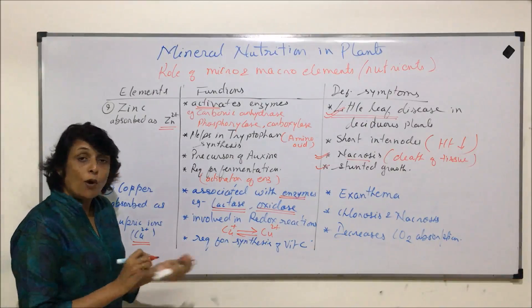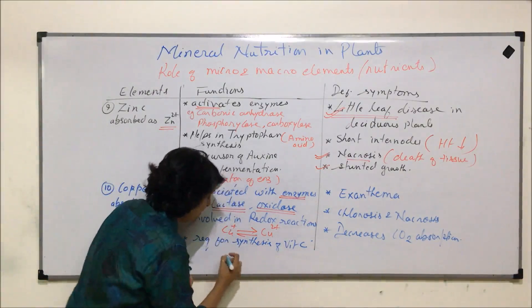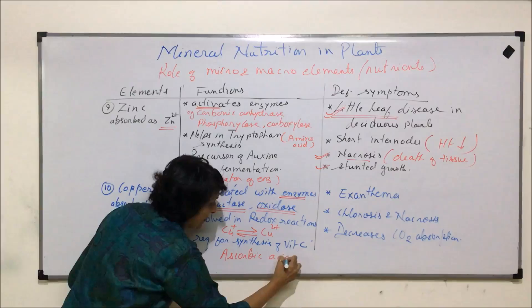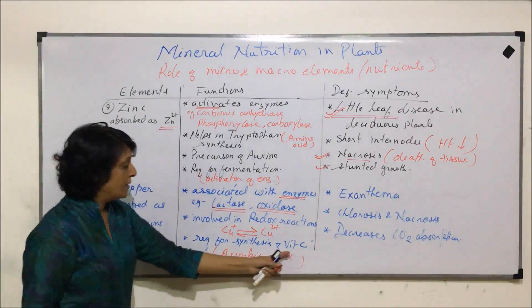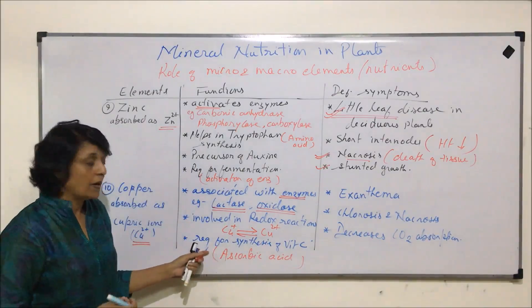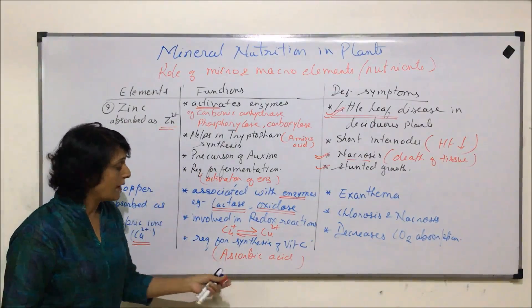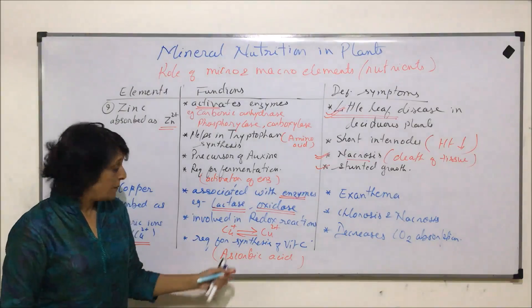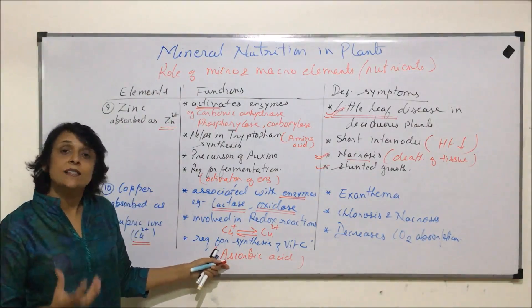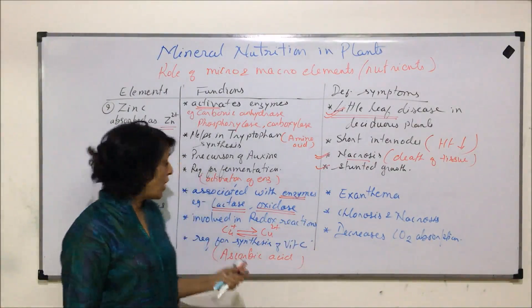Another important function of copper is that it is required for the synthesis of vitamin C, that is ascorbic acid. If copper is sufficient, vitamin C synthesis takes place properly. This is especially important in citrus plants where ascorbic acid is the main acid.